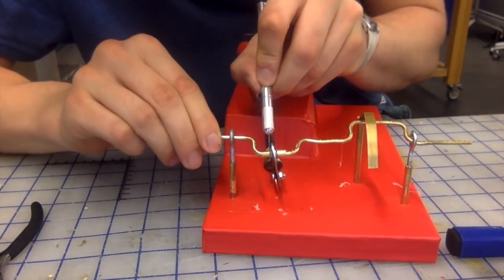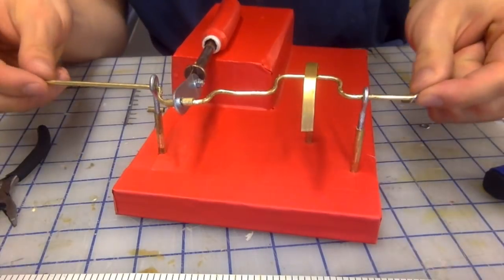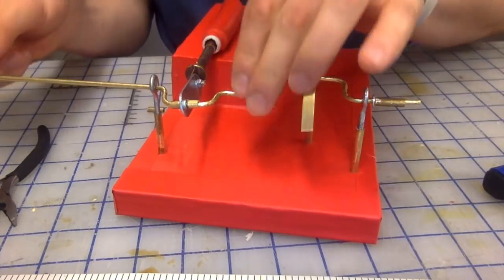After removing the excess hot glue, I got to adding washers to either side of the crankshaft to keep it in place, and then glued more of the brass piping to lock in the washers.